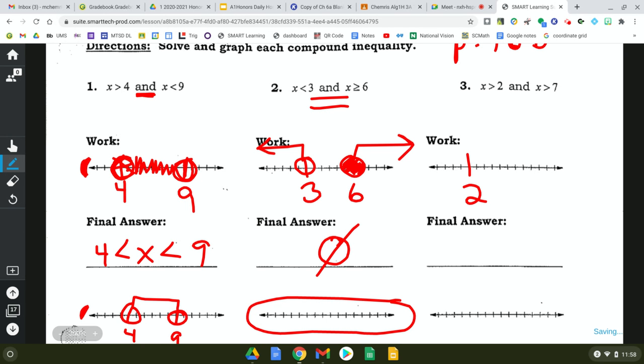Number 3. x is greater than 2 and x is greater than 7. So my work graph will say greater than 2 and greater than 7. Because this is and, my final answer has to be where the two overlap. Where do these two overlap, Dillon?